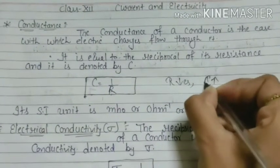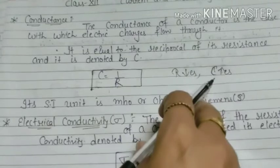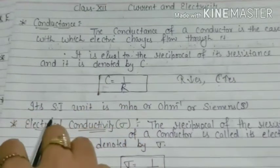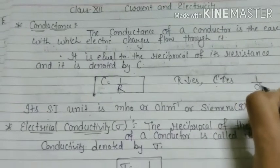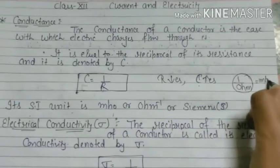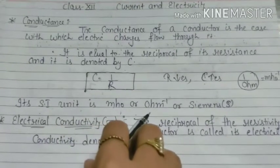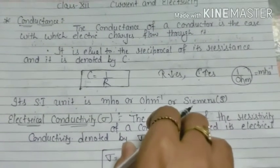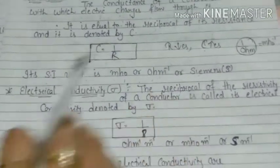जैसे-जैसे resistance की value कम होती जाएगी, conductance बढ़ती जाएगी। इसको हम G symbol से denote करते हैं। Conductance की unit क्या है? 1 by ohm — ohm inverse — जिसको हम mho लिखते हैं। तो conductance की unit है mho, ohm inverse, या फिर हम बोल सकते हैं Siemen (S)।